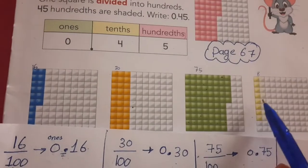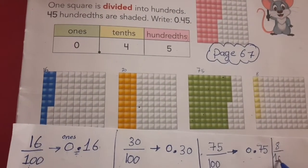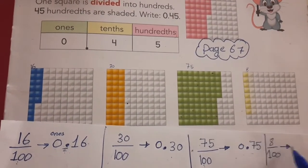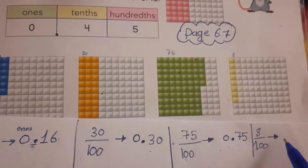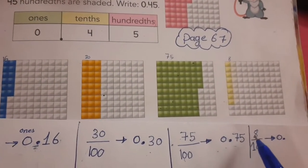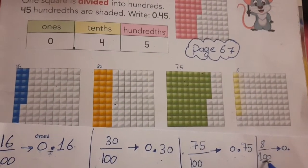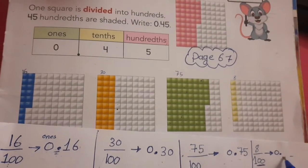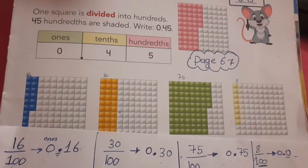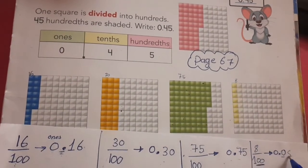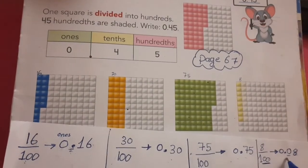Number four. We have only eight colored parts out of one hundred. We will convert this into decimals. Do we have a whole number? No. Put zero in the ones place, then decimal point. How many colored parts? Look carefully — the denominator has two zeros, so we must have two digits after the decimal point. At the tenths place, we don't have any number, so put zero. At hundredths, put eight. This is zero point zero eight — eight hundredths.